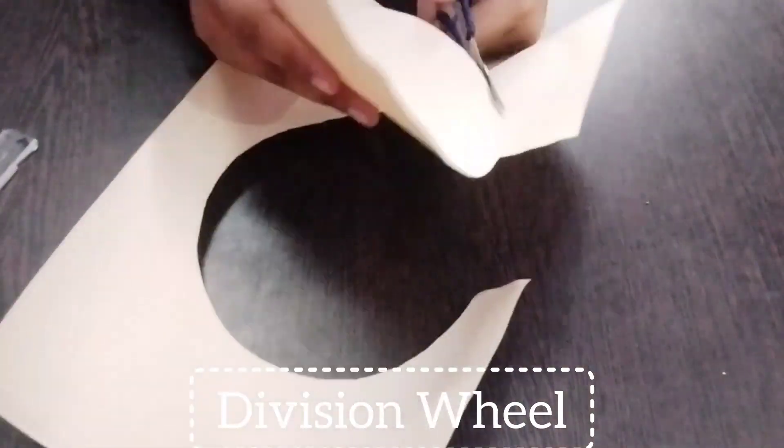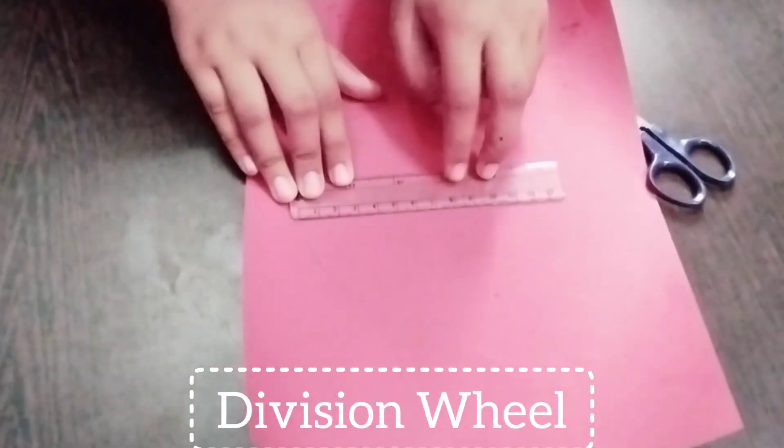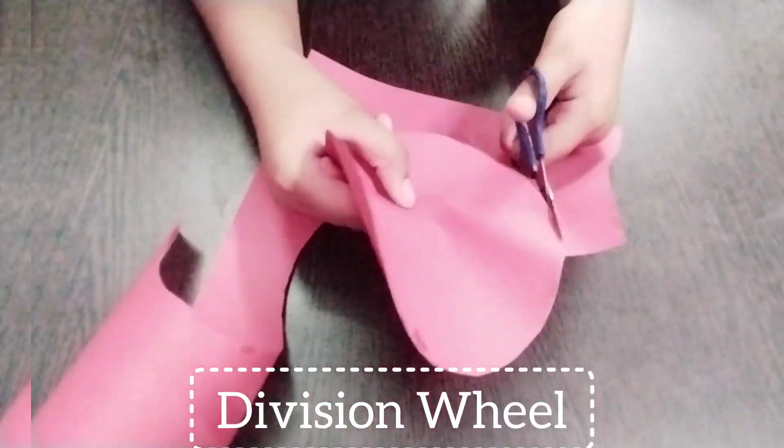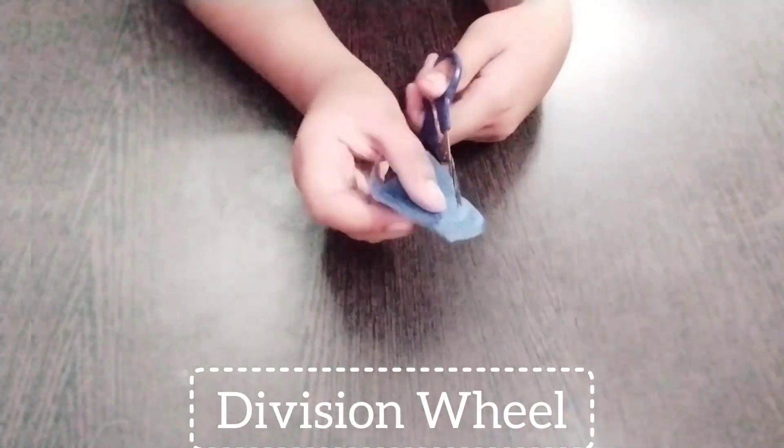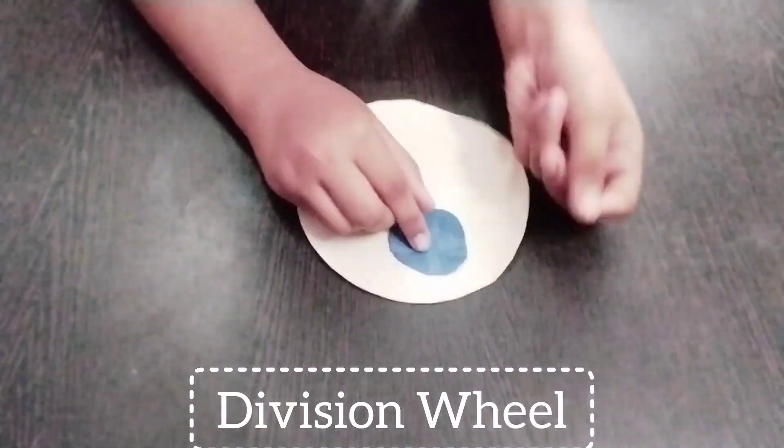Using a rounder, measure the center point. Cut out the circle using scissors. Take a colored A4 sheet, draw the same size circle as before, and cut it out. Cut out a small circle to make a division symbol.